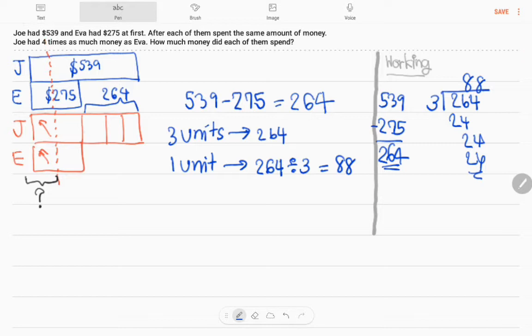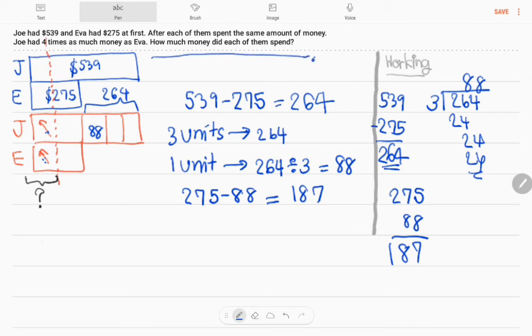Now we know one unit. How much money did each of them spend? So, we should know how each of them spend. First we should find the total of Eva. The total of Eva is $275 minus $88. That will give us $187. Now we know how much did each of them spend. Each of them spend $187.